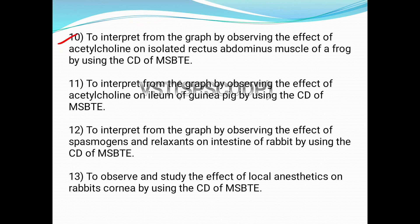The tenth experiment is to interpret from the graph by observing the effect of acetylcholine on the isolated rectus abdominus muscle of a frog using the CD of MSBT. You have to observe the video of this experiment from the MSBT CD and study the effect of acetylcholine on the rectus abdominus muscle of a frog.